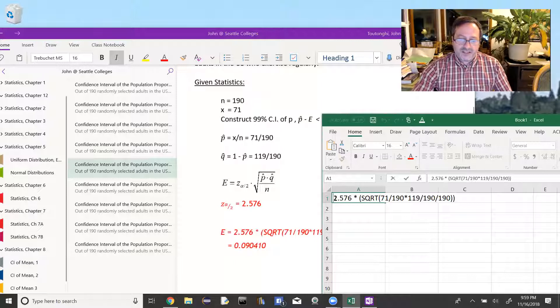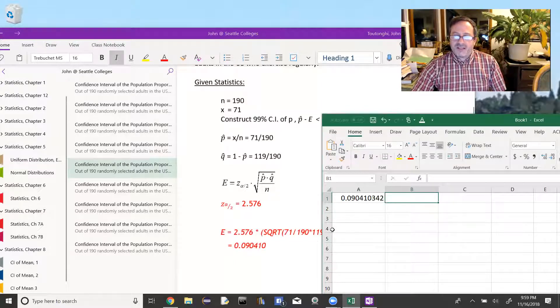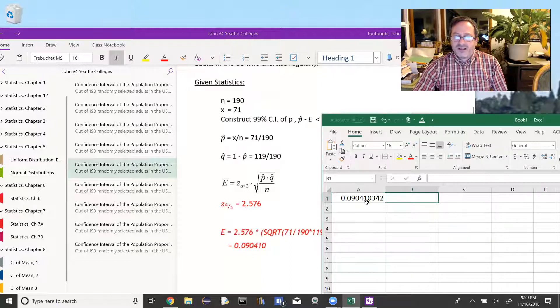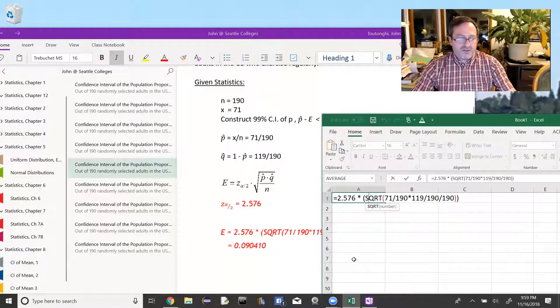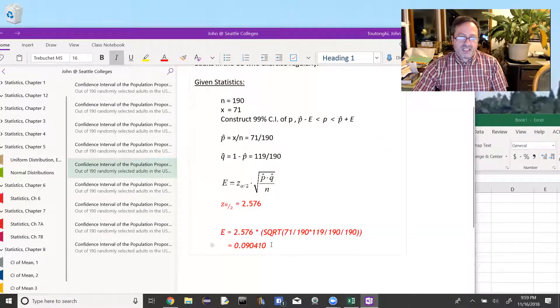It's kind of nice, we can just plug this all in from left to right, and Excel will calculate it for us. Put equals in front of it, tab, so my error is 0.0904. Maybe I'll carry it to a few more decimal places, so 0.090410 would be six decimal places.